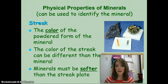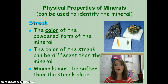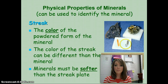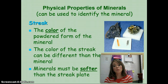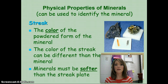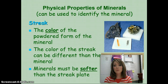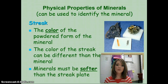Our next property is called streak — the color of the powder of the mineral. The powder color can sometimes be different from the color you see on the mineral itself. For example, one mineral that looks grayish-black has a brownish-red streak, and a goldish-colored mineral can have a gray streak. To do this test, your mineral has to be softer than the streak plate, which has a hardness of about 6.5. Harder minerals won't rub off any powder onto the streak plate.